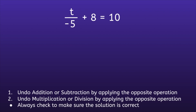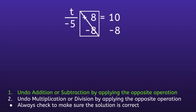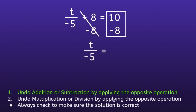Example number 2: t over negative 5 plus 8 is equal to 10. Step 1: undo addition or subtraction by applying the opposite operation. In this one we can see that we have plus 8, and the opposite of plus 8 is minus 8. We're going to do that to both sides of the equal sign. If we focus on the left, positive 8 minus 8 cancels out, so we're left with t over negative 5. And on the right side, we have 10 minus 8, and 10 minus 8 is equal to 2.